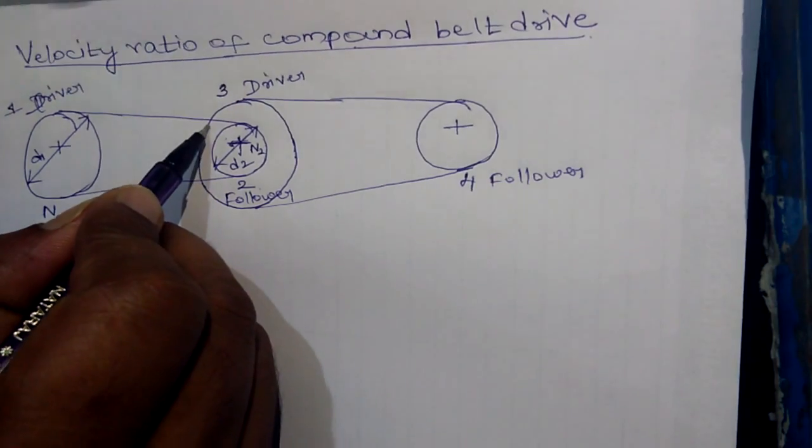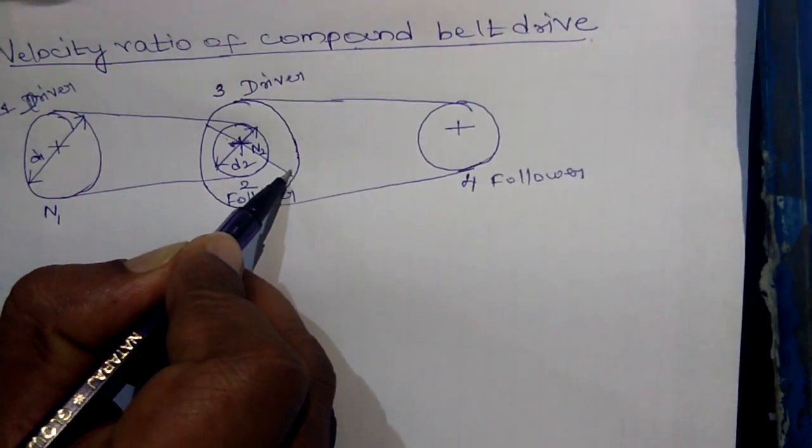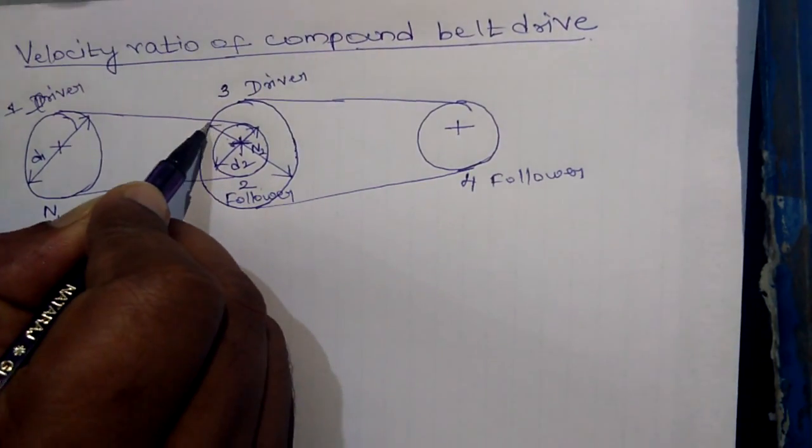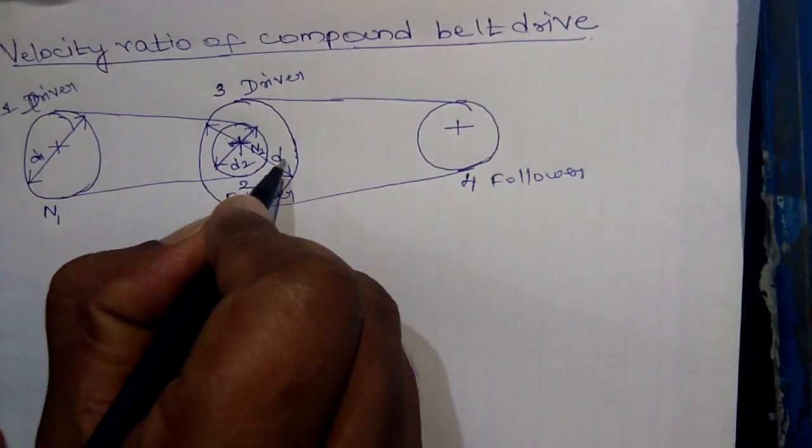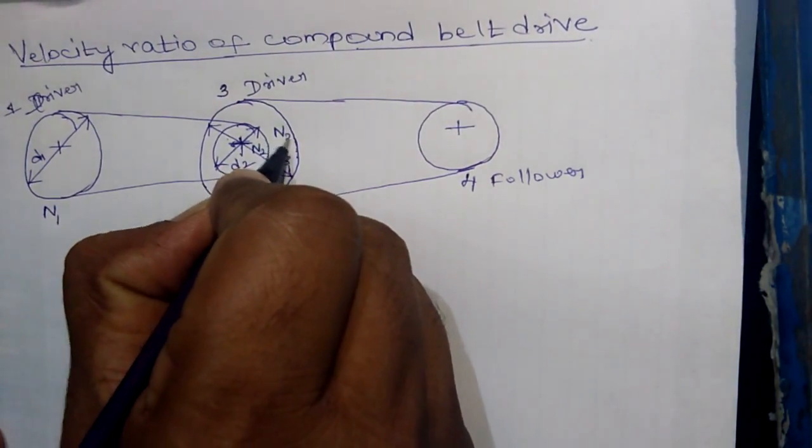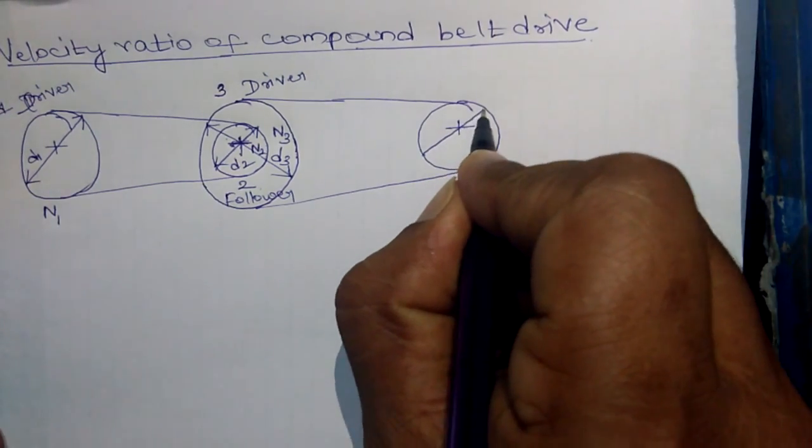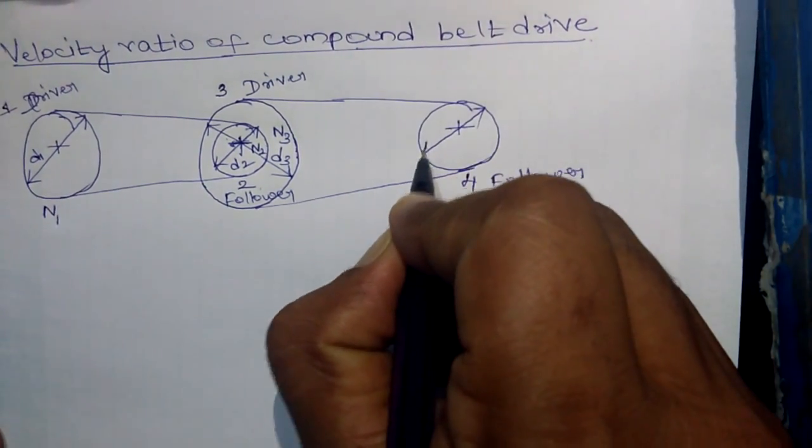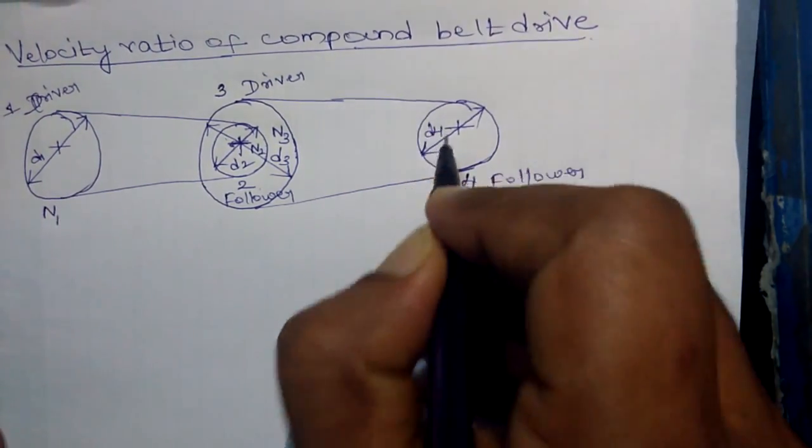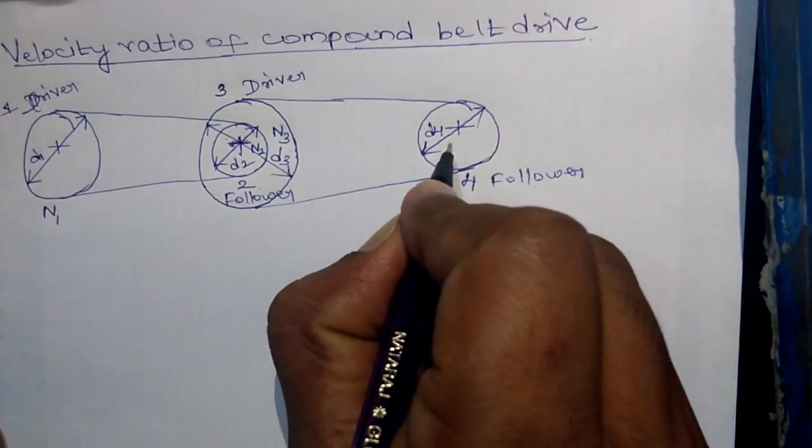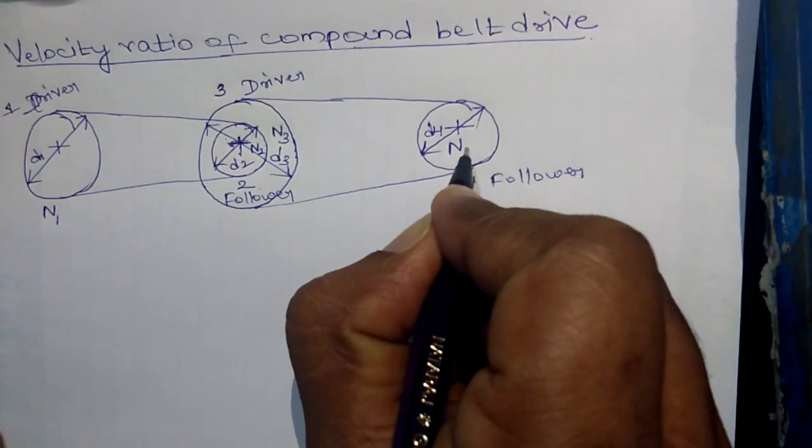The diameter of pulley 3 is d3 and the speed of pulley 3 is n3. The diameter of the follower pulley is d4 and the speed of pulley 4 is n4.